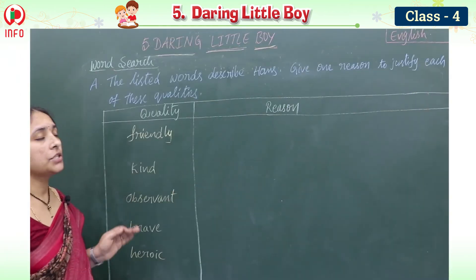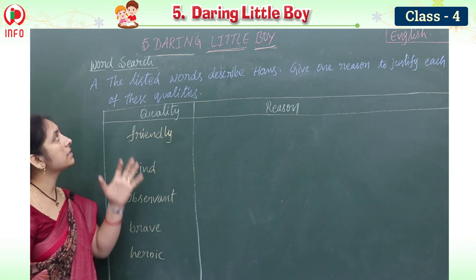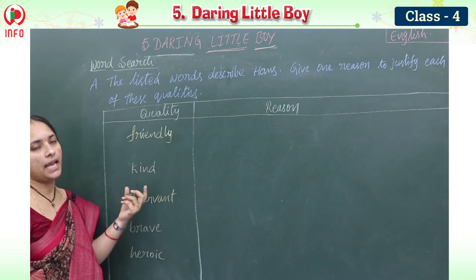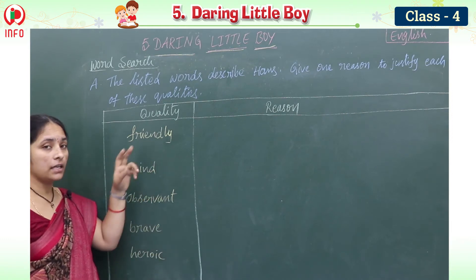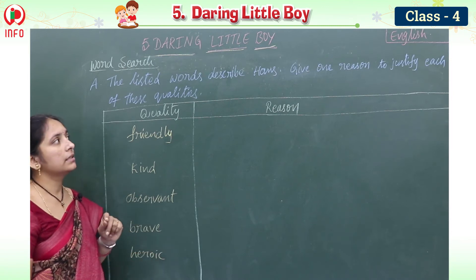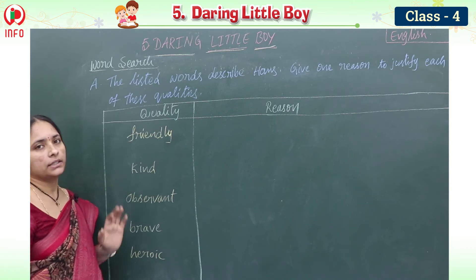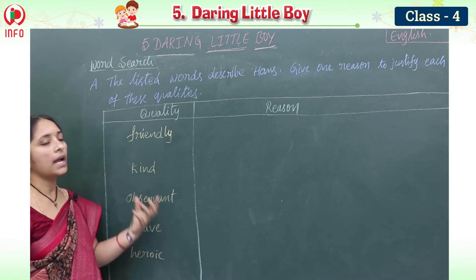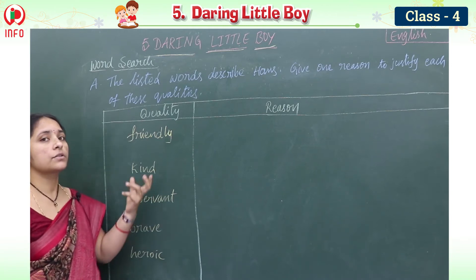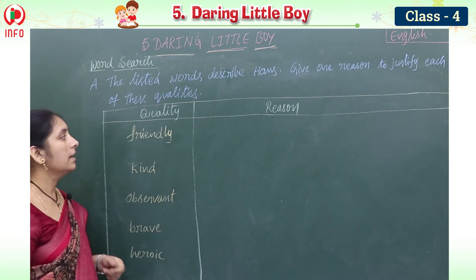Next we have a word search activity. The listed words describe Hans: friendly, kind, observant, brave, and heroic. We need to give one reason to justify each of these qualities. For friendly: he made friendship with a poor old man.